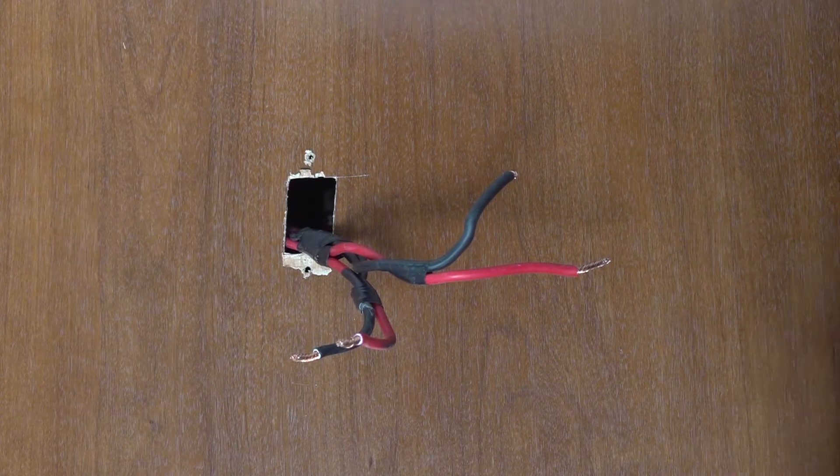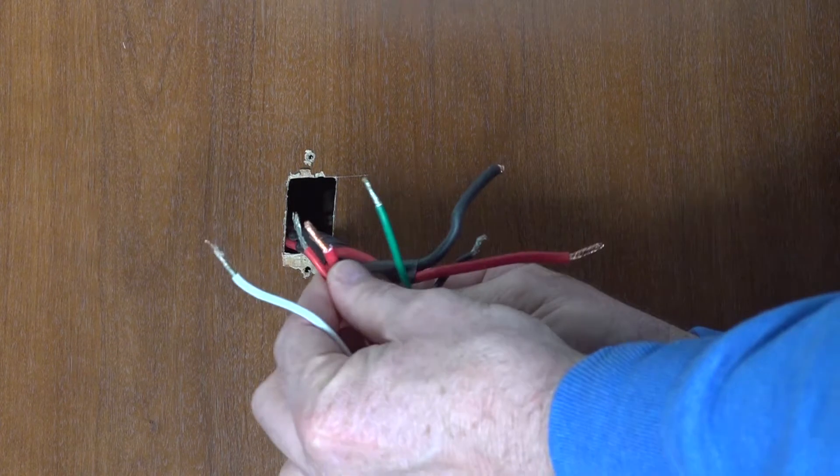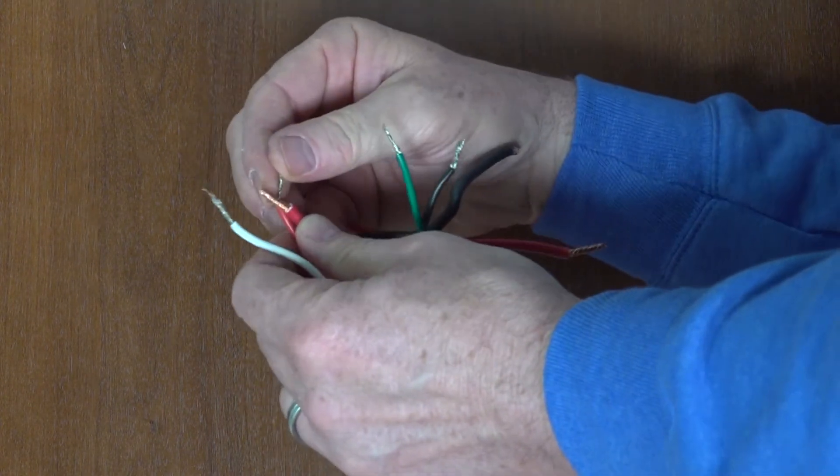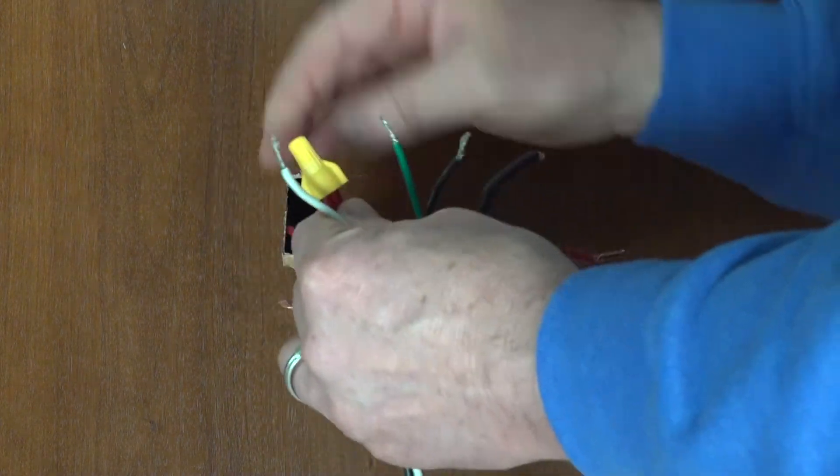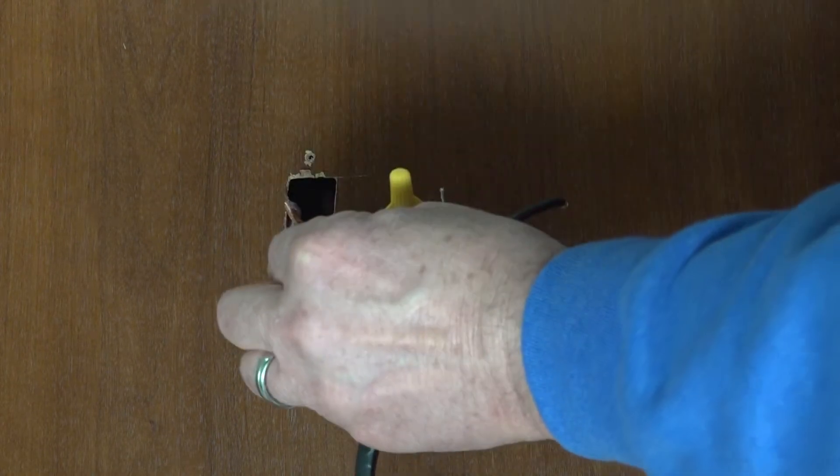splice the input power wire to the power harness lead by twisting the wires together, then tightening down the wire nut to secure their coupling. Repeat this step again for the output wire and the lead running to the ground.